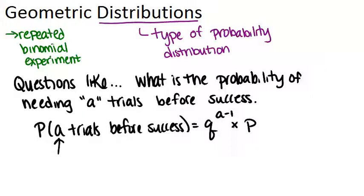For example, if we're thinking about flipping a coin, at some point we're probably going to get heads, but it is possible to flip the coin a hundred times and get tails every single time. So if we want to think about the probability of how many trials it takes before success, there's really an infinite number of rows that we'll need in our table.